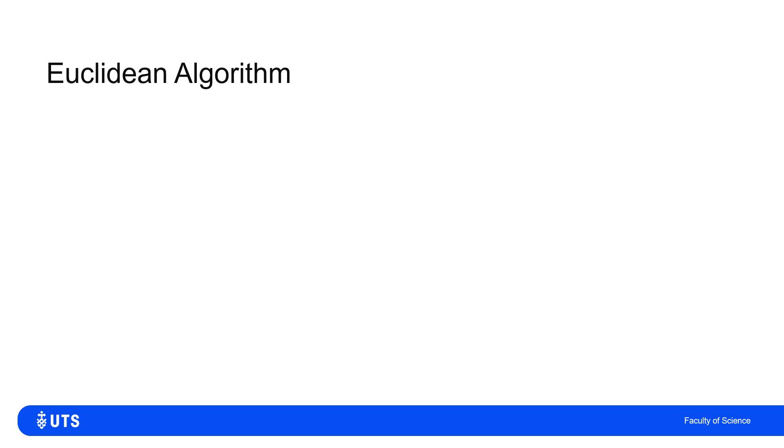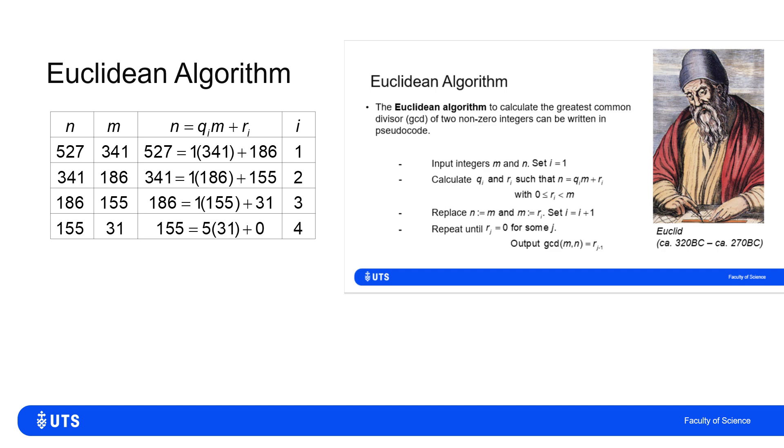So we can now see an example of how the Euclidean algorithm works. So we'll take the problem of finding the greatest common divisor of 527 and 341.